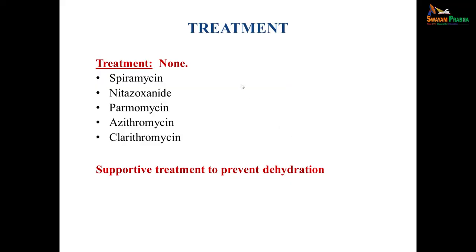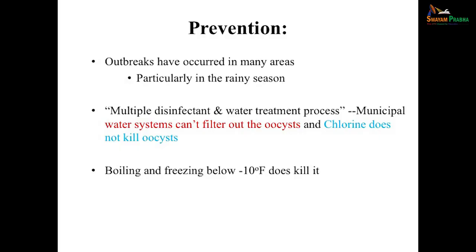Treatment: many do not require treatment due to asymptomatic illness. When required, spiramycin, nitazoxanide, paromomycin, azithromycin, or clarithromycin could be useful. Supportive treatment is needed due to fluid loss, especially in immunocompromised patients to prevent dehydration. For prevention, since outbreaks occur in many areas especially during rainy seasons, multiple disinfectant water treatment processes are needed, but most do not filter out the oocysts and chlorine does not kill them. Filtered or boiled water is needed; boiling and freezing below minus 10°C can kill the oocysts.